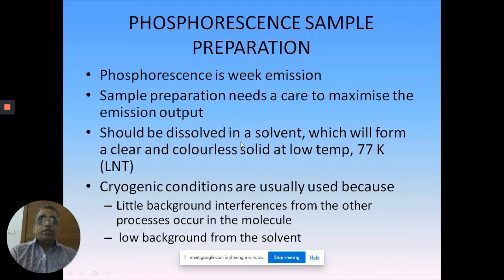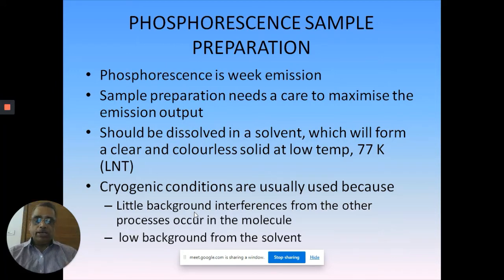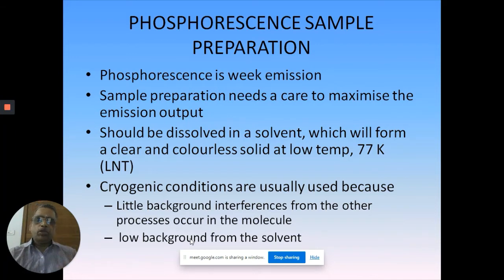When you go for the 77 Kelvin measurement - LNT, liquid nitrogen temperature - cryogenic conditions are usually used. Why? Because we want to reduce background interferences from fluorescence and other phenomena, and also reduce background from the solvent. If you have impurities from the solvent, that will also interfere. Cryogenic conditions will give you almost background-free phosphorescence.